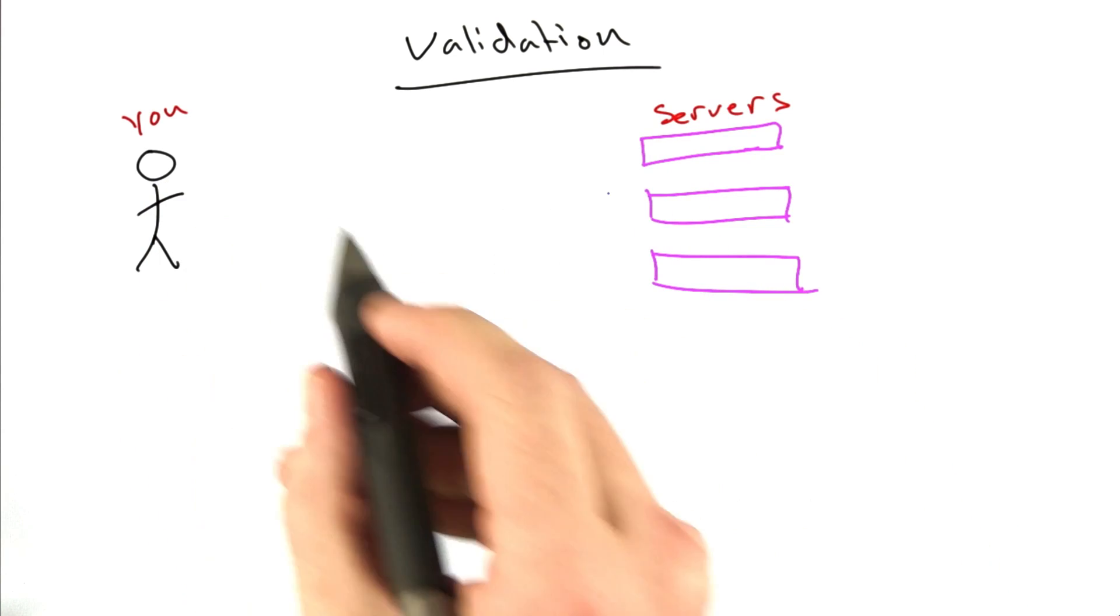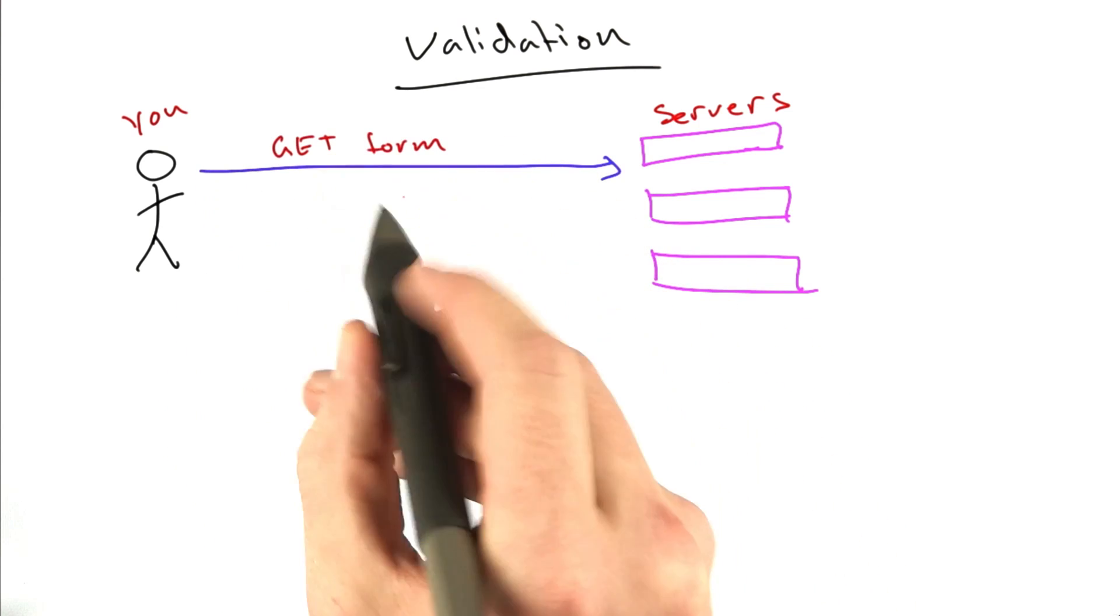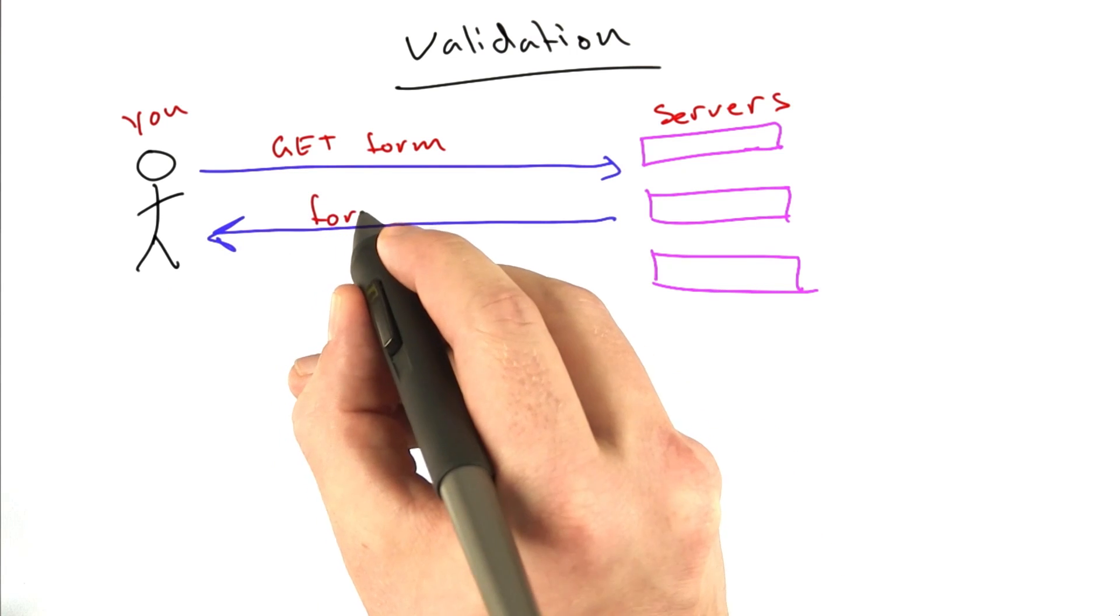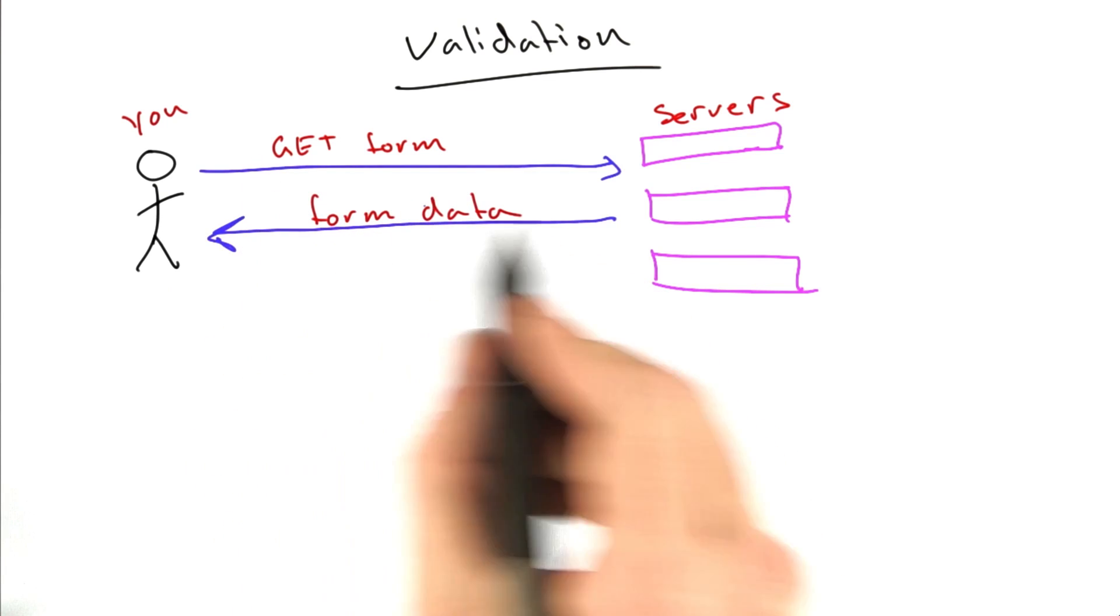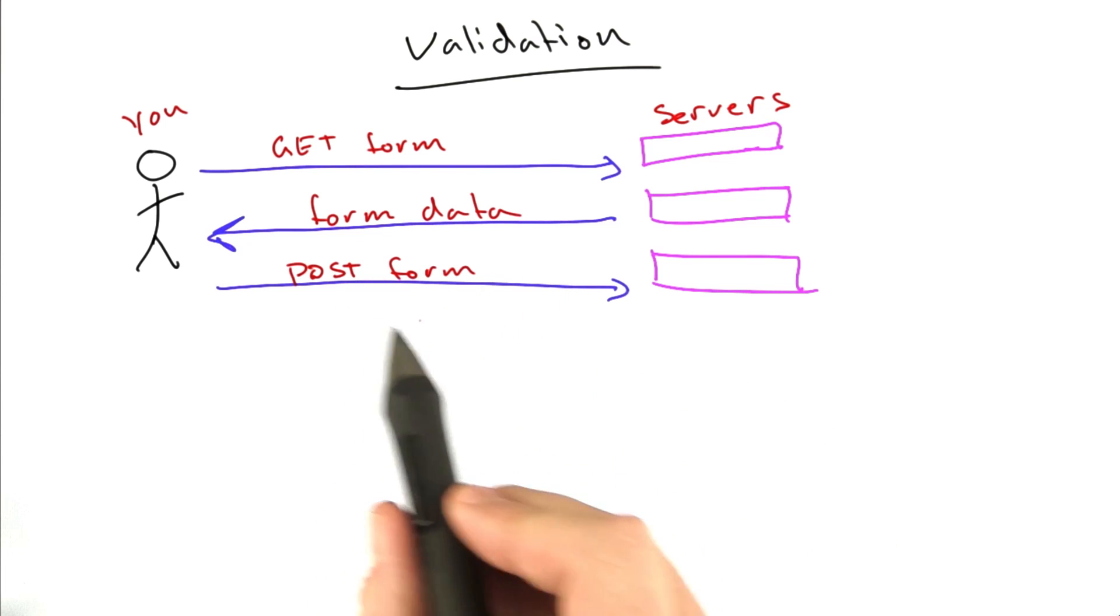So we have you, and we have our servers, and you make a request for the form, and this is a GET request, and the server responds with the form data. Then you make a POST request to the server with the data. In this case, it'll be a month, day, and year.